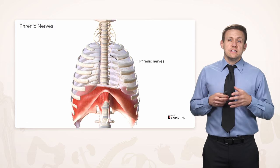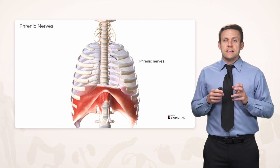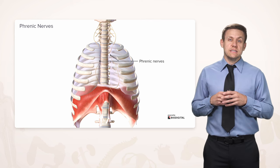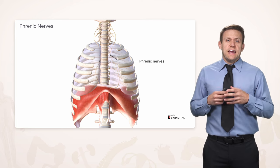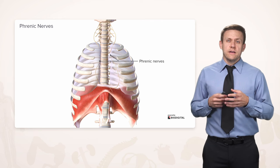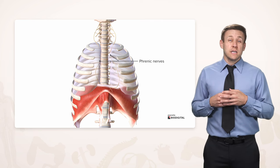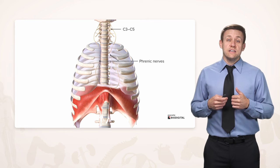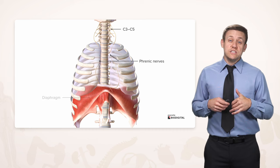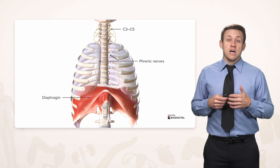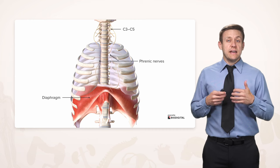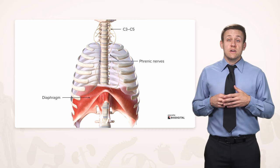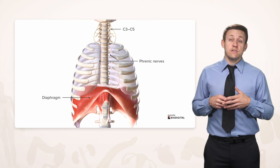Let's talk briefly about the phrenic nerves. They're pretty interesting and have a fascinating embryologic development, which you can appreciate by how long they are. They originate up in the cervical area, coming from cervical spine levels C3, C4, and C5, then descend through the mediastinum to reach the diaphragm. While their major job is motor innervation of the diaphragm, they also innervate a lot of structures along the way to provide sensory information, as we've already seen with the mediastinal and diaphragmatic pleura.